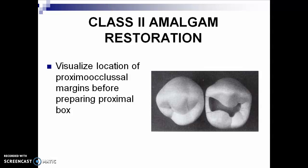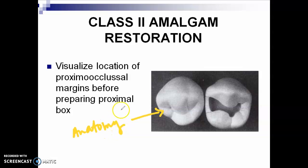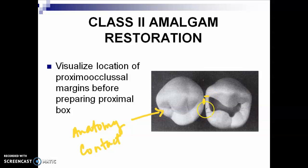Remember, whenever you do a Class 2 preparation, you have to check first — number 1 — the anatomy of the tooth; you always follow the anatomy. Number 2, the contact area. You always want your proximal box to be away from the contact area — 0.5 millimeters buccally and 0.5 millimeters lingually.